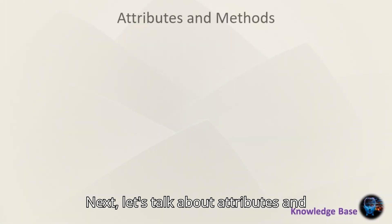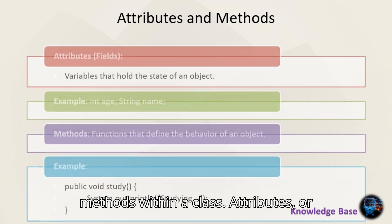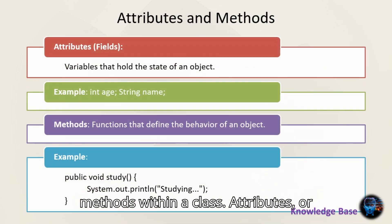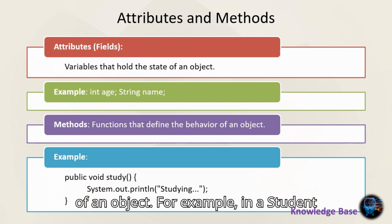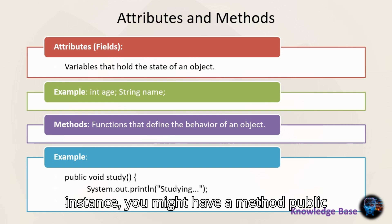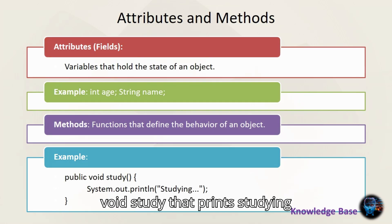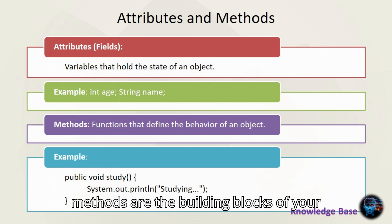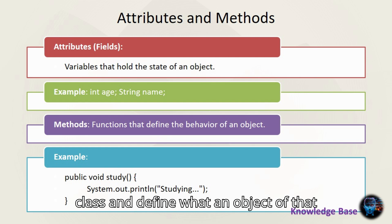Next, let's talk about attributes and methods within a class. Attributes, or fields, are variables that hold the state of an object. For example, in a Student class, attributes could be int age and String name. Methods are functions that define the behavior of an object. For instance, you might have a method public void study that prints "studying" to the console. These attributes and methods are the building blocks of your class and define what an object of that class can do.